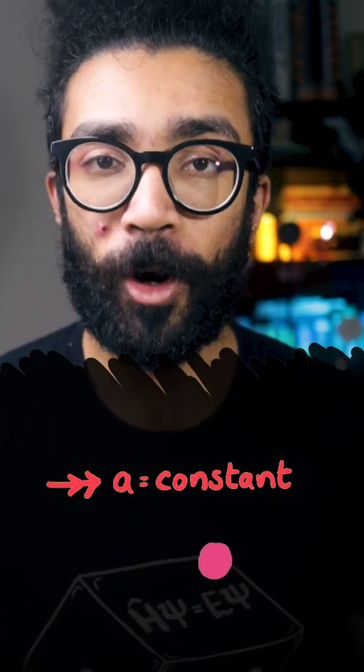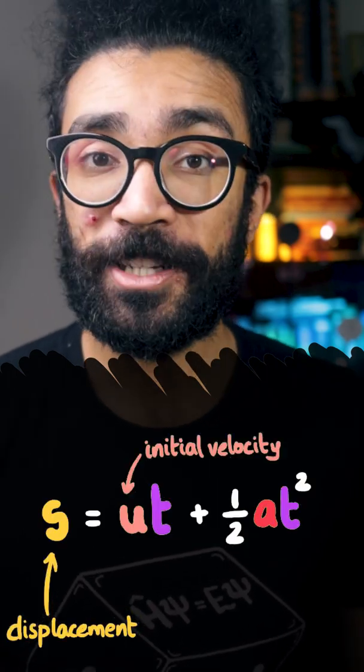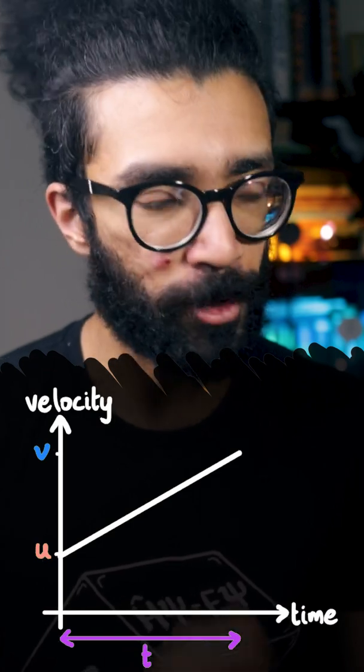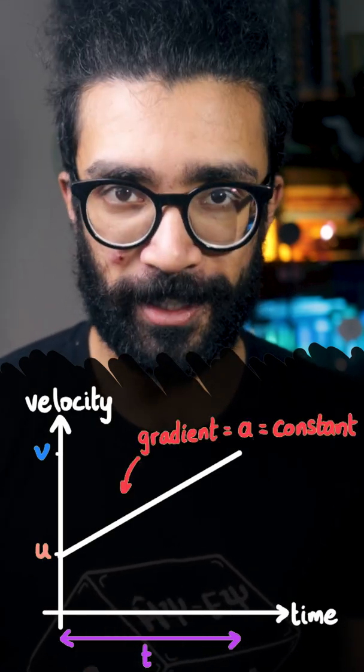Today we'll be looking at one way to understand this particular equation. Let's imagine that we plot the motion of our object on a velocity-time graph. As required, it moves in a straight line with constant acceleration.